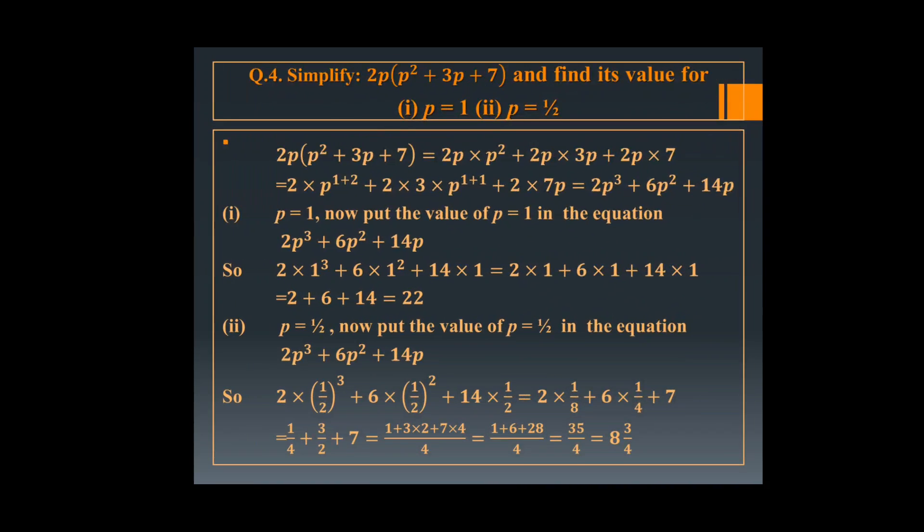Now in question number 4, simplify 2p multiplied by p square plus 3p plus 7, and then find its value for p equal to 1 and p equal to 1 upon 2. So first, 2p multiplied by p square, then 2p multiplied by 3p, then 2p multiplied by 7. Power of p in the first term is 1 plus 2, in the second it is 1 plus 1. So it is 2p cube plus 6p square plus 14p.